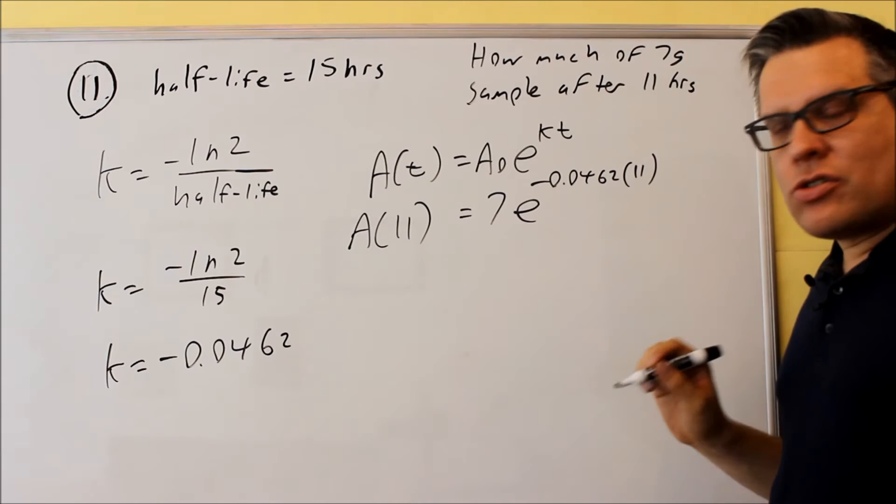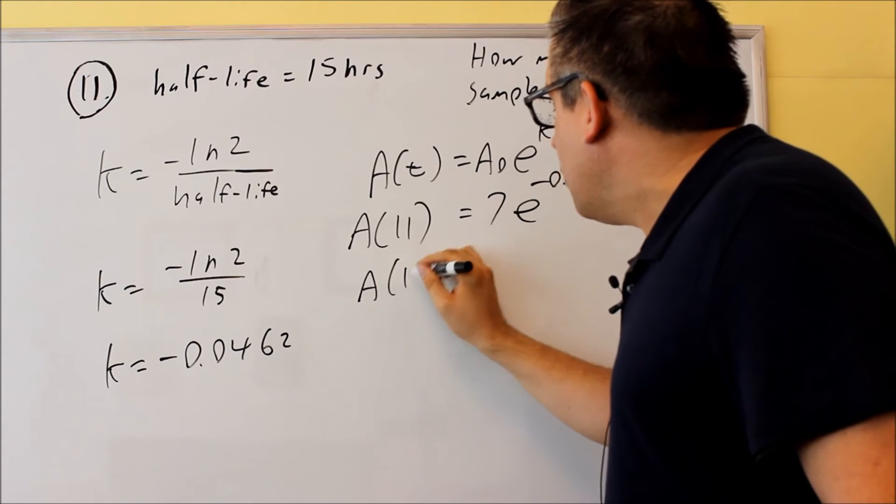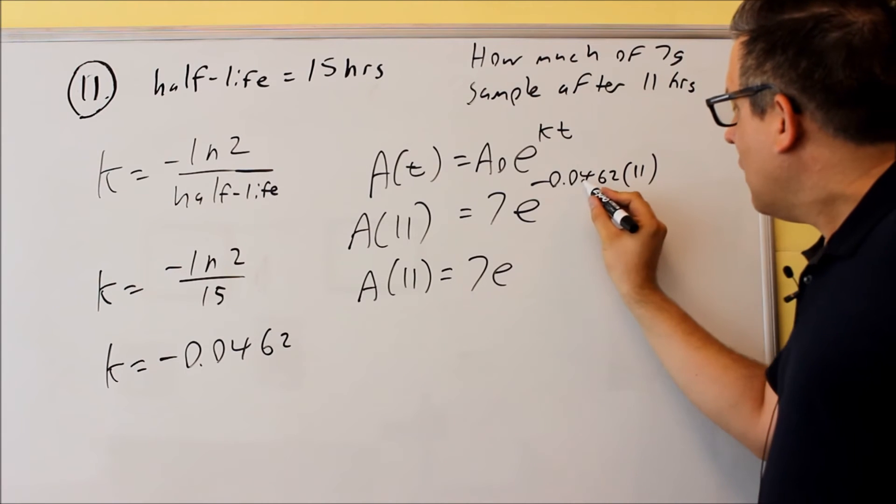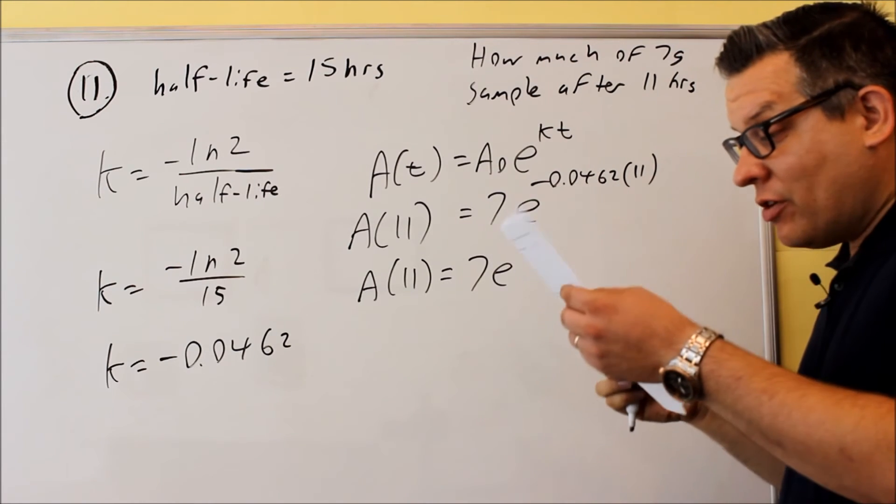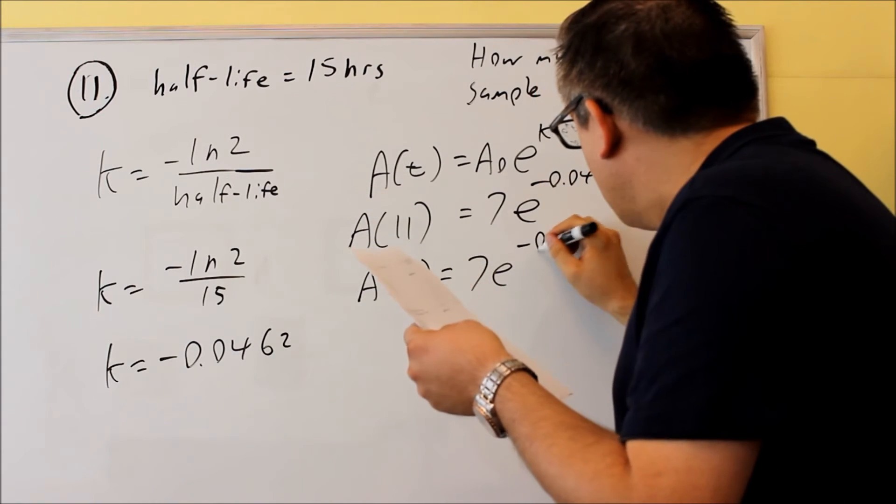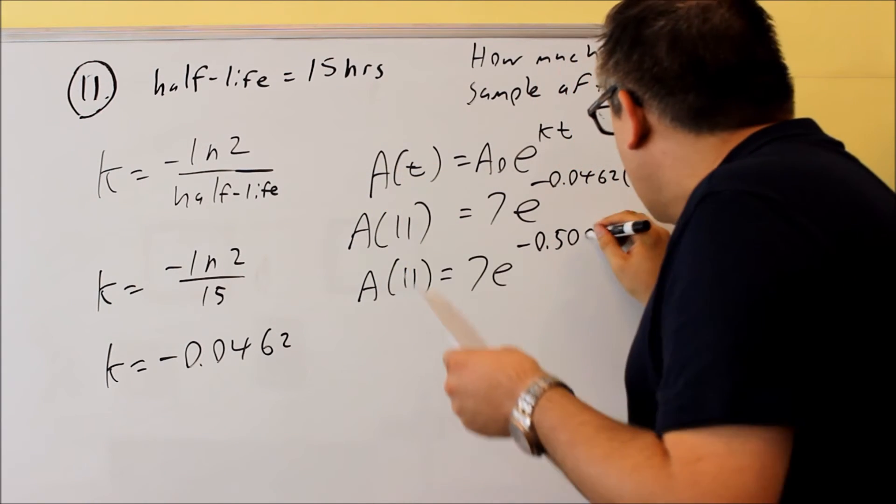Now we just need to put this into a calculator. You want to start with the exponent first. So multiply negative 0.0462 times 11, and when you do that, you're going to get negative 0.5082.